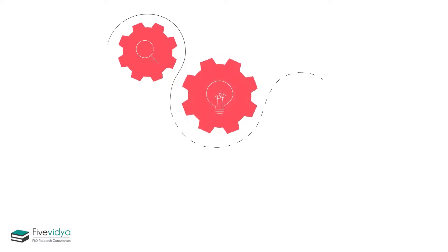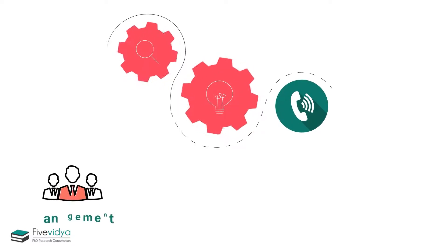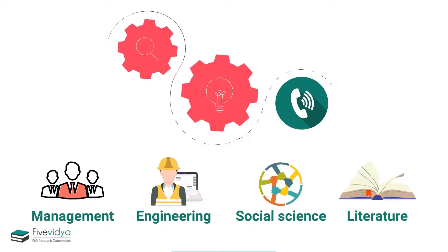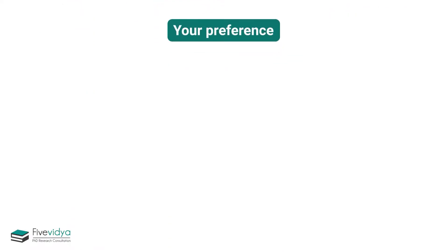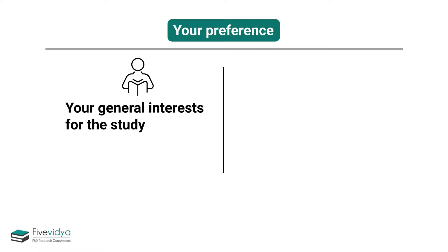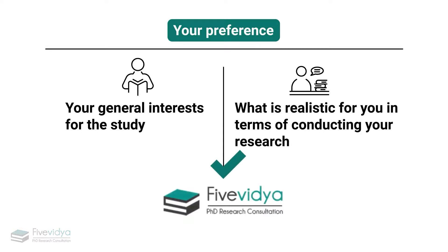Our topic consultation process begins with a call with one of our research consultants — either management, engineering, social science, or literature — depending on your preference, to discuss two basics: your general interests for the study and what is realistic for you in terms of conducting your research. Select the right topic of your research with 5 Vidya.